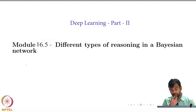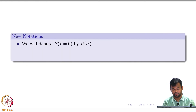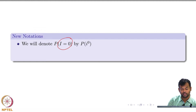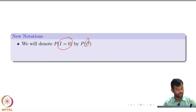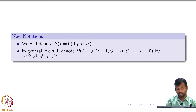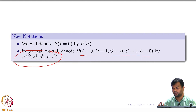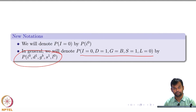Let us look at the different types of reasoning that you could do in a Bayesian network. From now on we will use the notation that if intelligence equals high or low, I will just call it I0 or I1—so 0 means low and I1 means high. This entire thing will be represented compactly; make sure you are comfortable with this notation.